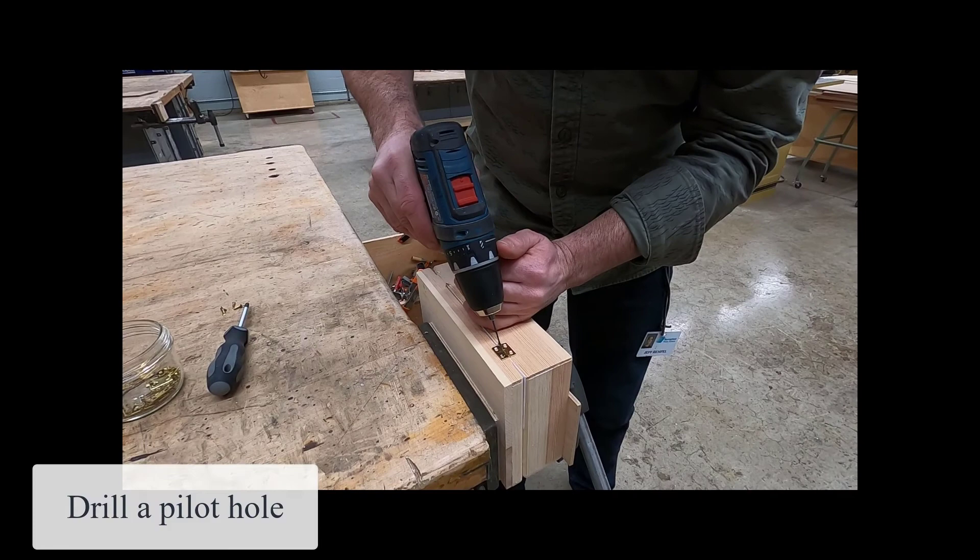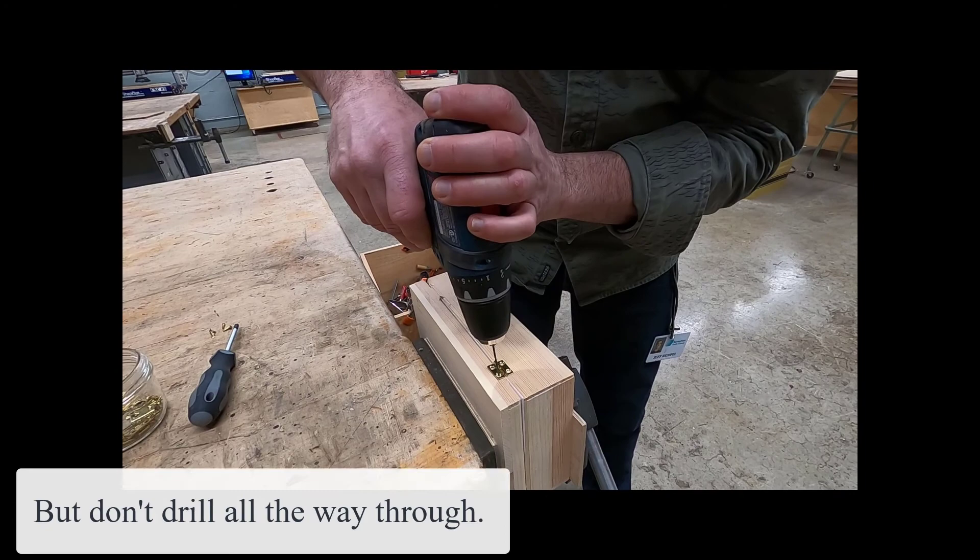Center a hinge between the top and bottom of your box and using a cordless drill, drill a pilot hole. Make sure that you don't drill all the way through - you're just starting the hole so that it's easy to attach your screw.